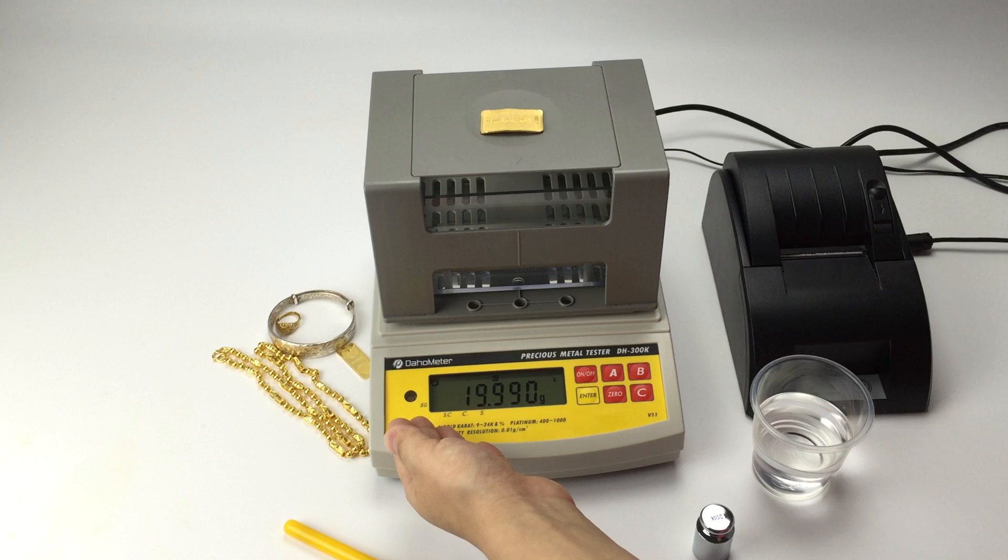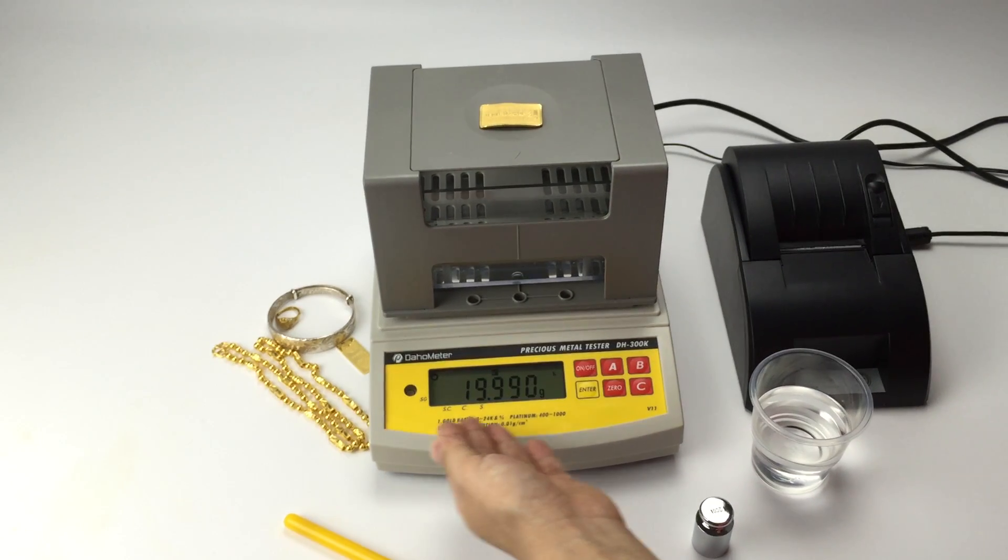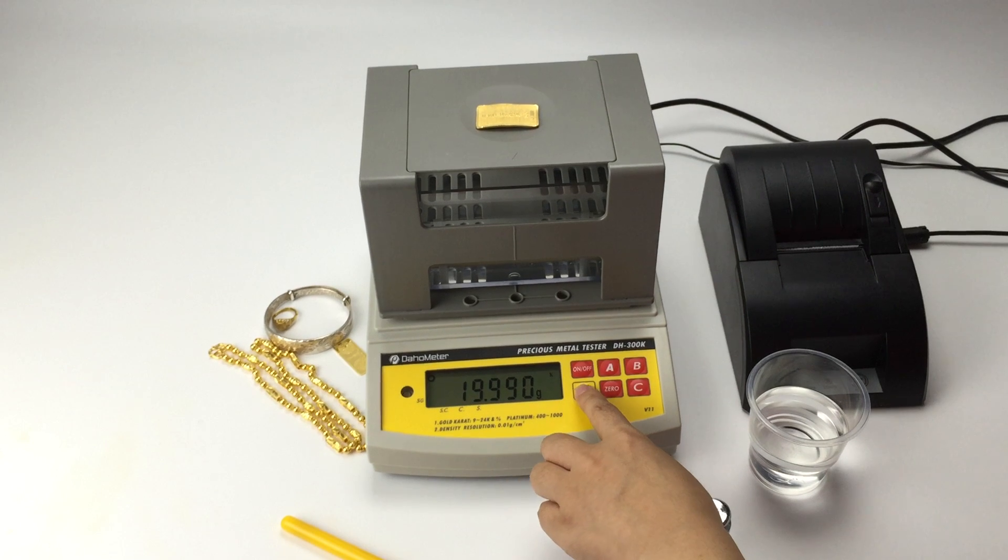You will see there is stable symbol on left top. And M1 is flinking. Press ENTER.